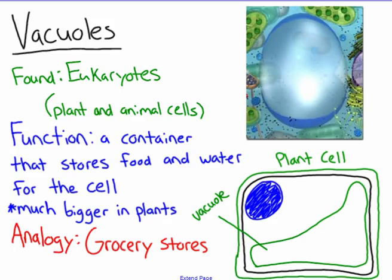Finally, we have vacuoles. Vacuoles are found in eukaryotic cells — plants and animals. Think of them as a grocery store, because they contain water and food for the cell. The big takeaway is that vacuoles are much bigger in the plant cell than in the animal cell.